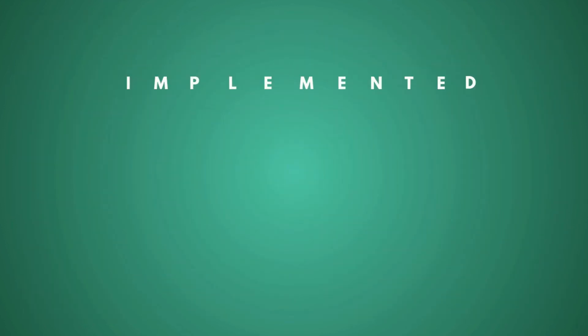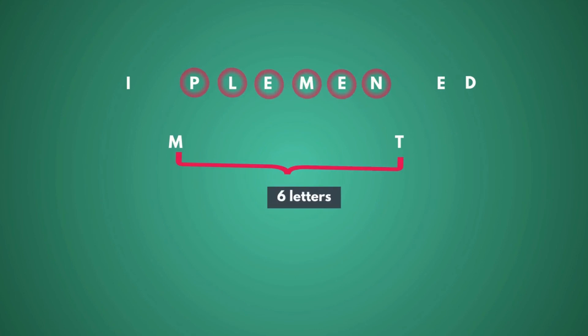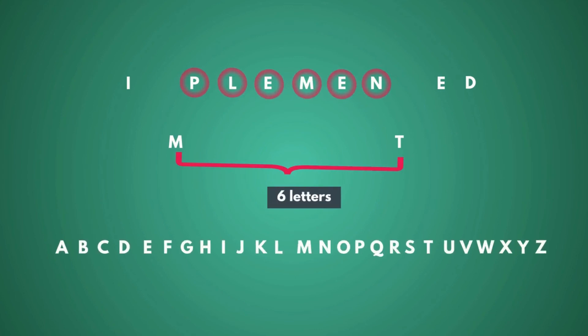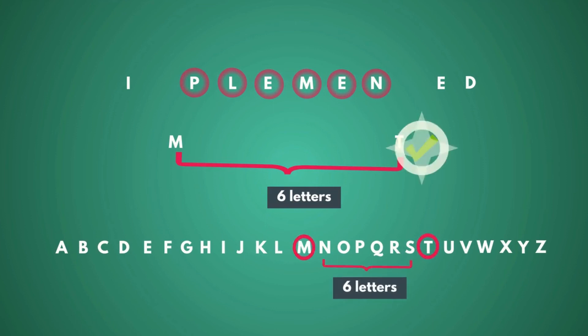There is another pair: M-T. There are six letters between M and T in the given word, and in the English alphabet also there are six letters between M and T. So this is also a valid pair.